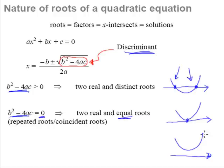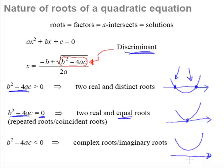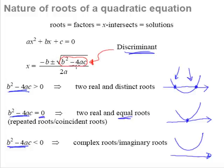What if your quadratic equation is hovering above the x-axis and does not intersect it at all? Then there is no x-intercept, which means there are no factors, no solution, and no roots. This happens when the discriminant b² minus 4ac is less than zero. We call these complex or imaginary roots — the roots simply don't exist. We cannot square root a negative number; if you try it on a calculator with the square root of negative 1 or any negative number, you get an error. So there is no real value for x.